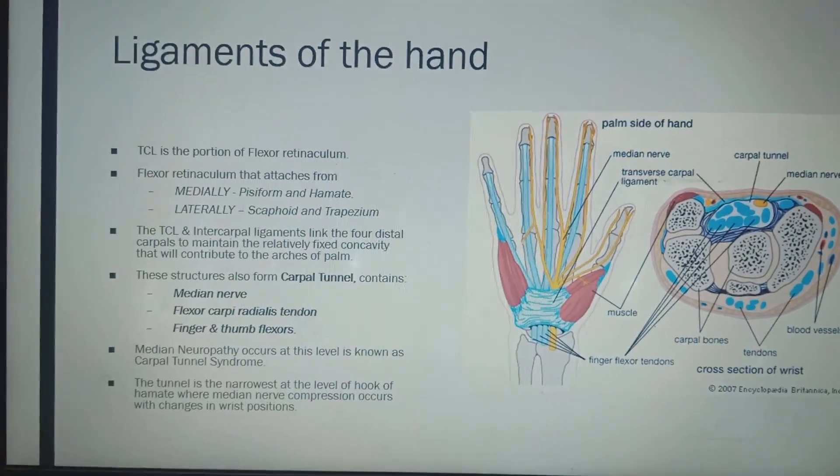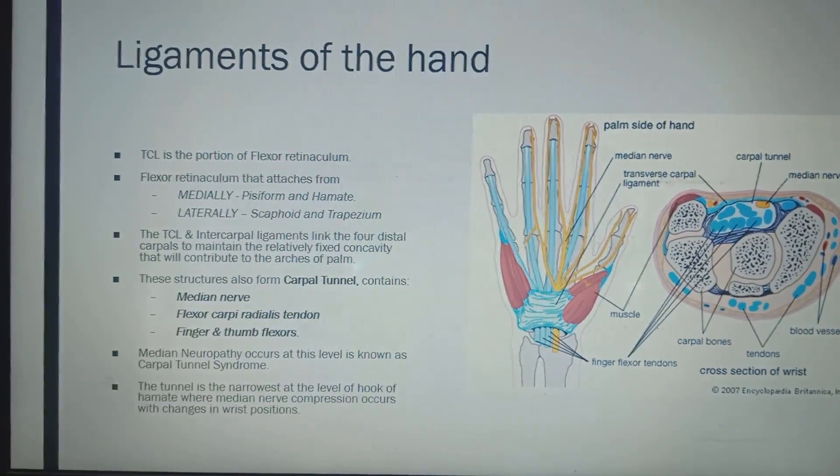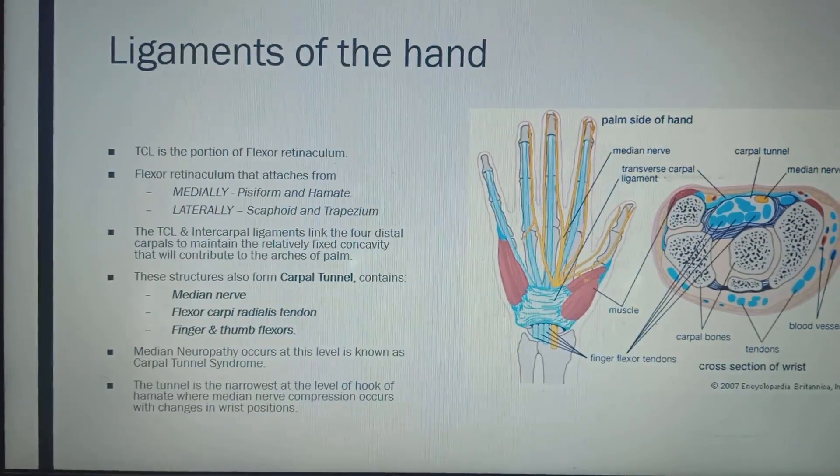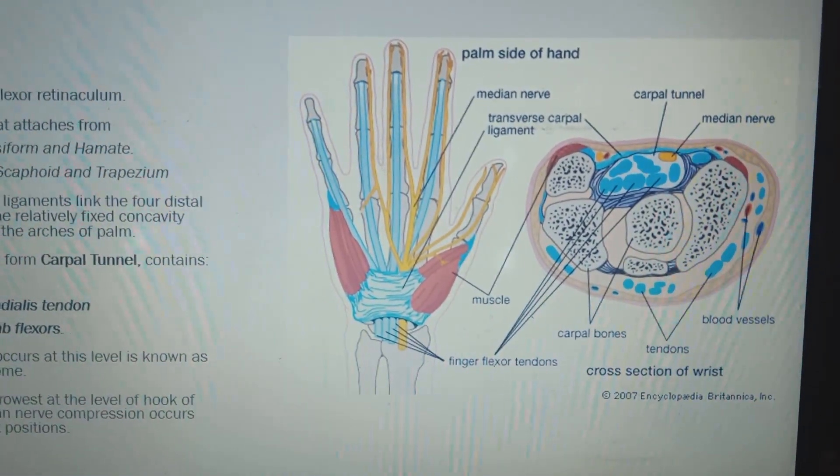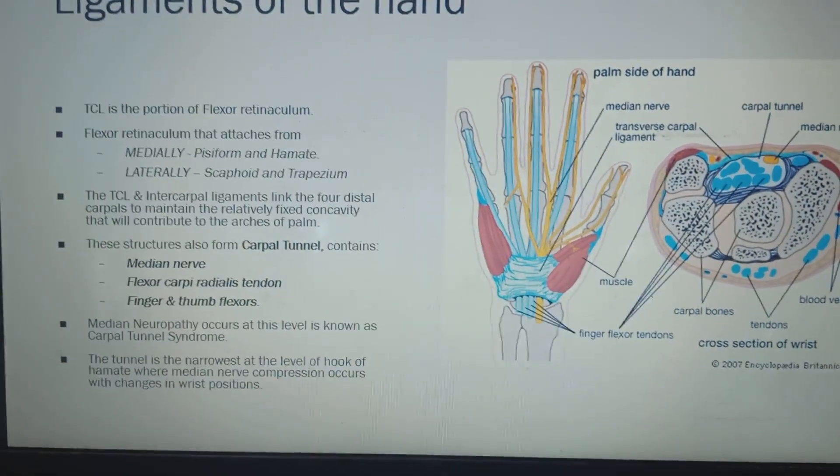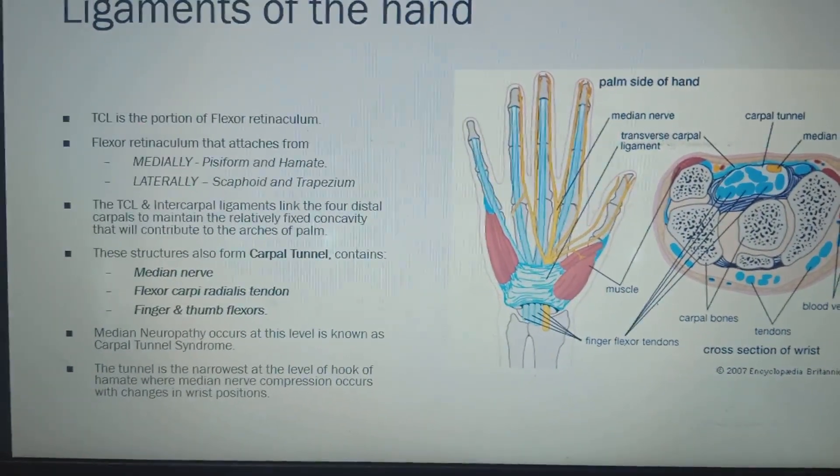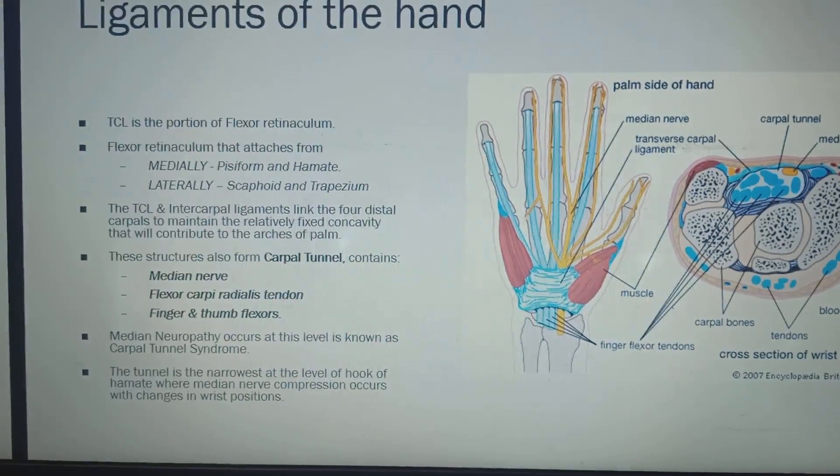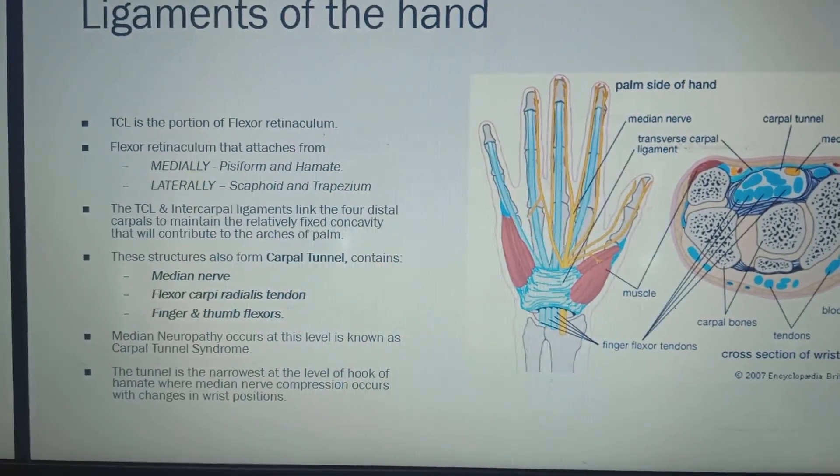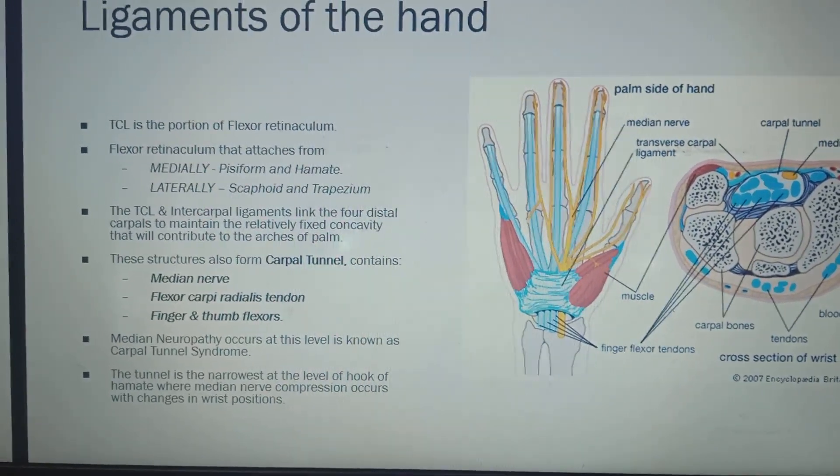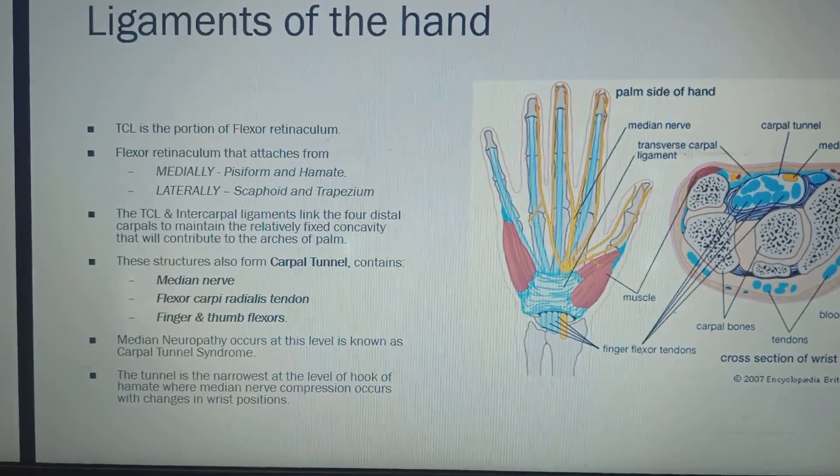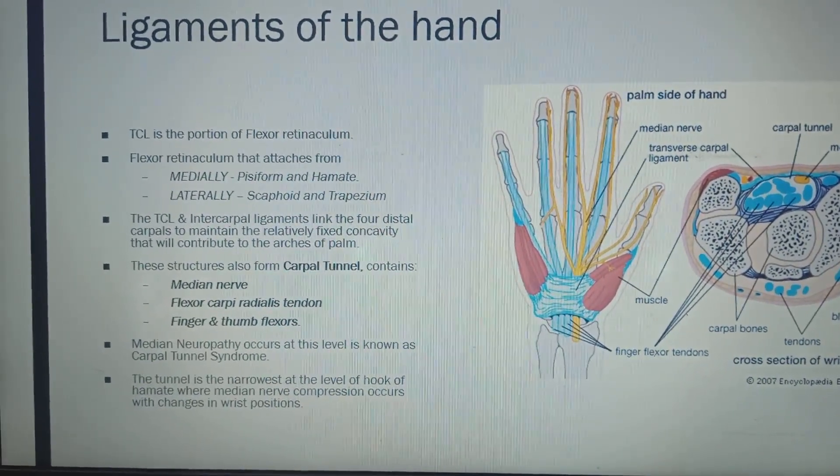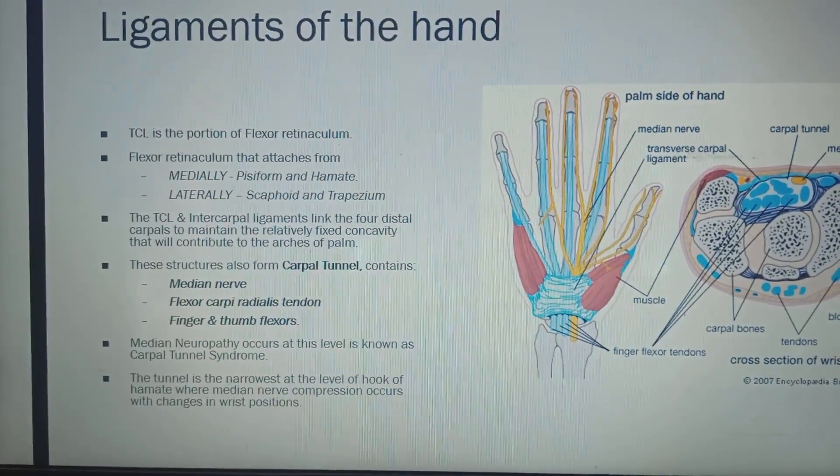As you can see over here, the TCL is the portion of flexor retinaculum. You can see in this diagram, this flexor retinaculum is attached medially from pisiform and hamate bone and laterally from scaphoid and trapezium. That means both of the carpals, all 8 and all 2 rows.